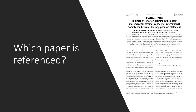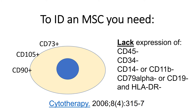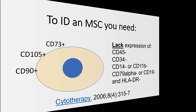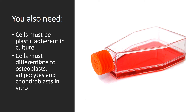The folks who did this white paper reference the standard paper used to identify mesenchymal stem cells. To identify an MSC, you need three specific markers to be present on the cell and a set of other markers not to be on the cell. You also need to show that the cells are plastic-adherent in culture, and the cells have to be able to trilineage differentiate.